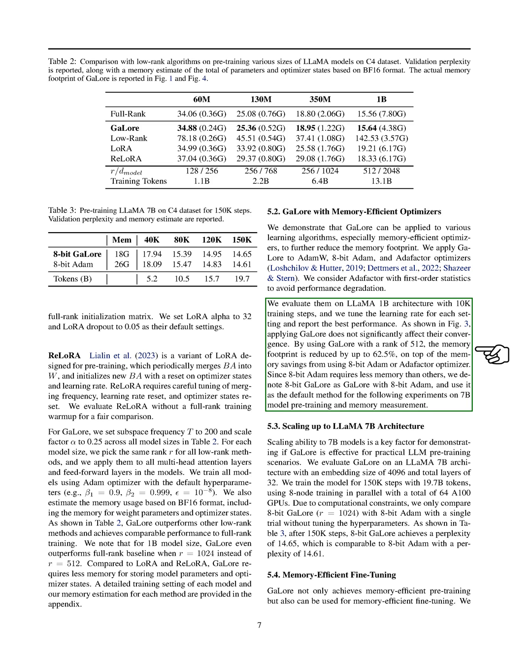Scaling up to larger models, we evaluate GaLore on a LLaMA 7B architecture and compare its performance with 8-bit Adam. GaLore achieves comparable results to 8-bit Adam after 150k training steps. Furthermore, GaLore can be used for memory-efficient fine-tuning of pre-trained models on tasks like GLUE. GaLore shows better performance than LoRA on most tasks with a smaller memory footprint. This highlights GaLore as a comprehensive memory-efficient training strategy for both pre-training and fine-tuning large language models.